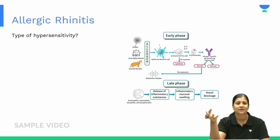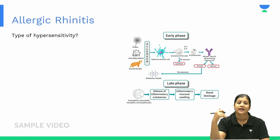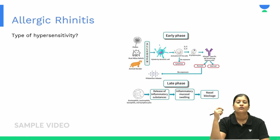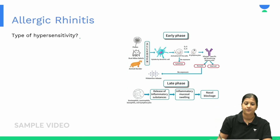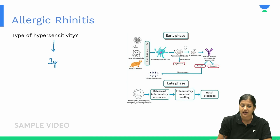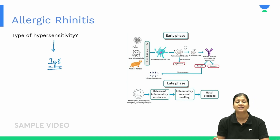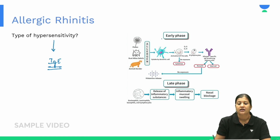Allergy is a very common condition. It is essentially a hypersensitive reaction, and this hypersensitivity is mediated by Immunoglobulin E — so allergy is an IgE-mediated disease. Whenever you're exposed to an allergen, this allergen is taken up by dendritic cells.